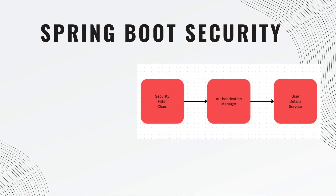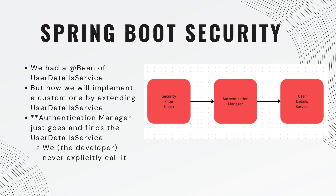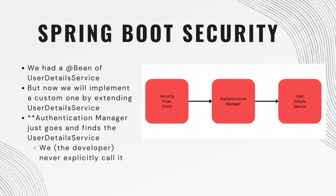In a previous video we talked about the security filter chain, but there are a few more things to cover. The first is the authentication manager — the security filter chain will call the authentication manager to check whether the user has the proper authority to visit an endpoint. The authentication manager then delegates that task to the user detail service, the bean we injected in our security configuration. Importantly, the authentication manager goes out and finds the user detail service automatically; as the developer, we never explicitly call this service class or method.